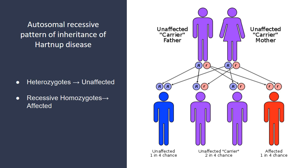Hartnup disease is an autosomal recessive trait. As shown in our pedigree diagram, there is an unaffected carrier father and a non-affected carrier mother, and one of their four children is a recessive homozygote — meaning that child will have Hartnup disease and all of its associated signs and symptoms.